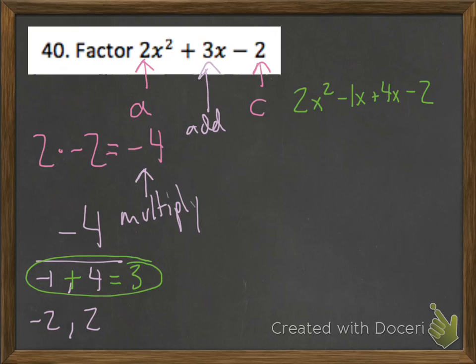Now, instead of using the box, I'm going to replace that middle term — a positive 3x — with two terms: negative 1x plus 4x. Everything else stays the same. I now have a four-term polynomial that I can factor by grouping. Looking at the first two terms, 2x squared minus 1x, they both have an x in common. I pull the x out and I'm left with x times the quantity 2x minus 1.